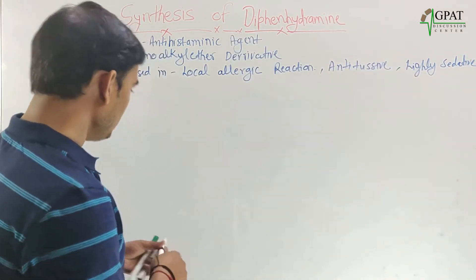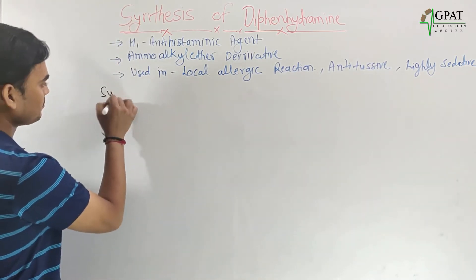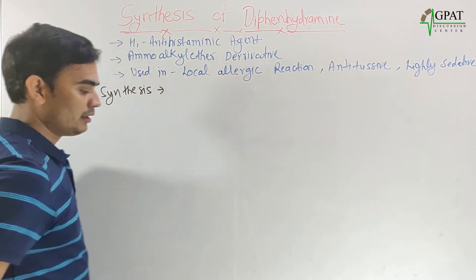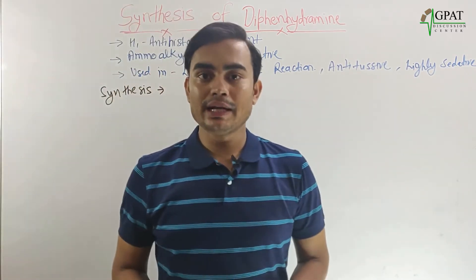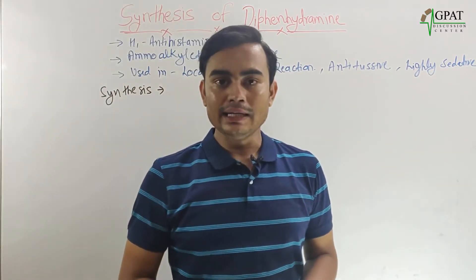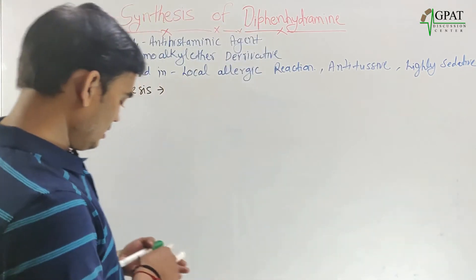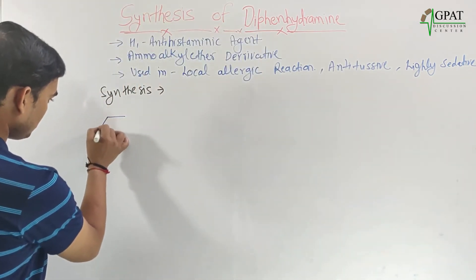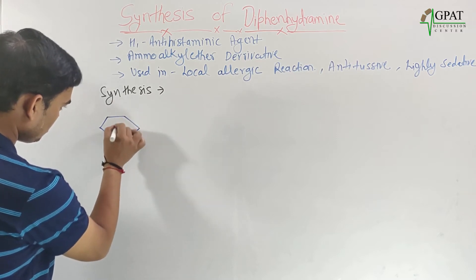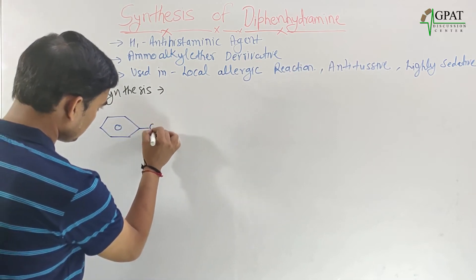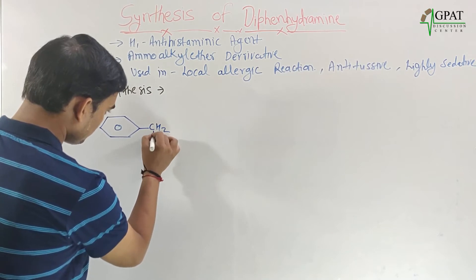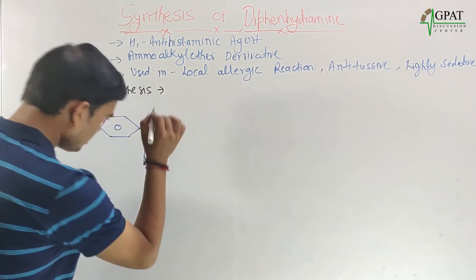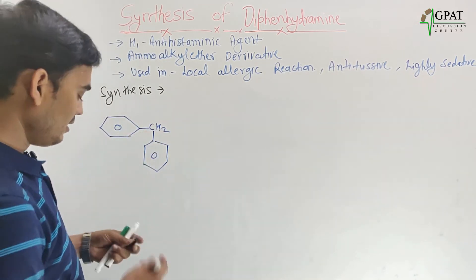Now let's come to the synthesis of diphenhydramine. The starting material for diphenhydramine synthesis is diphenylmethane, which has a CH2 group between two phenyl rings.